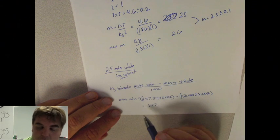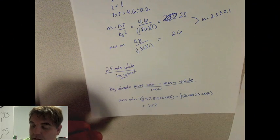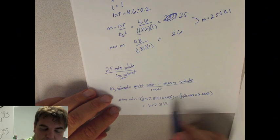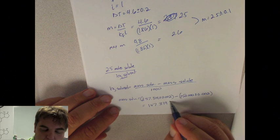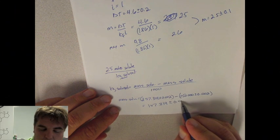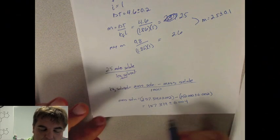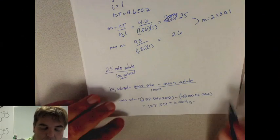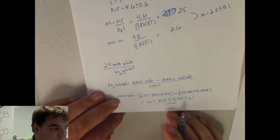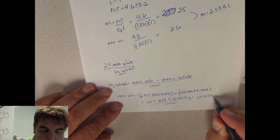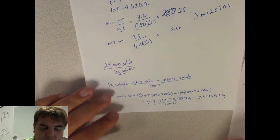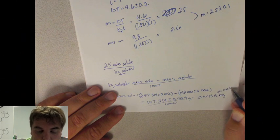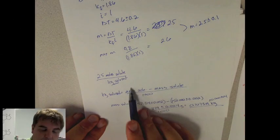And so that gives us the mass of the solution being 107.319. And then the error is additive, so 0.004. Now this is in grams, so then we need to divide that by 1,000 to get kilograms: 0.107319 kilograms, plus or minus 0.00004. So that gets us this number.